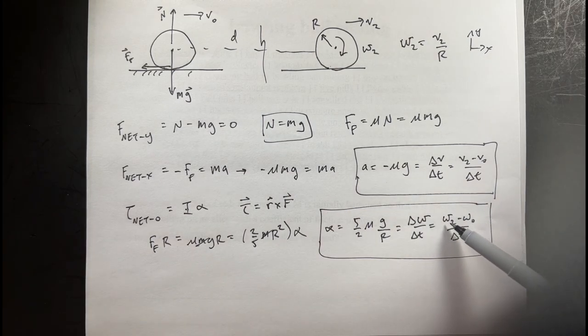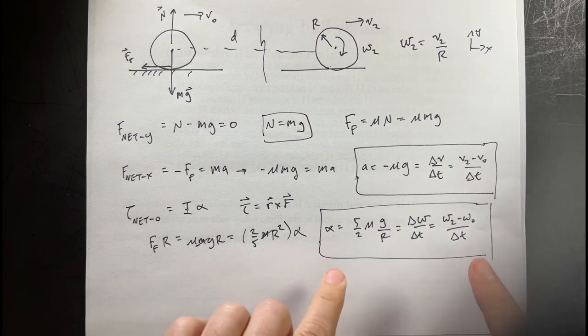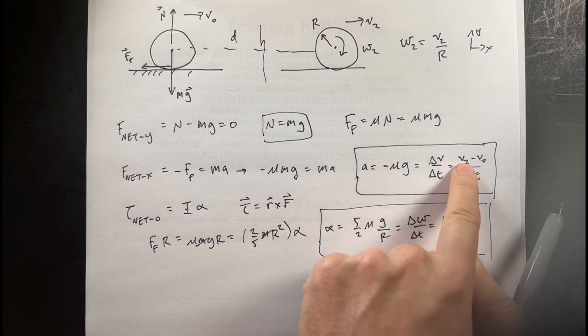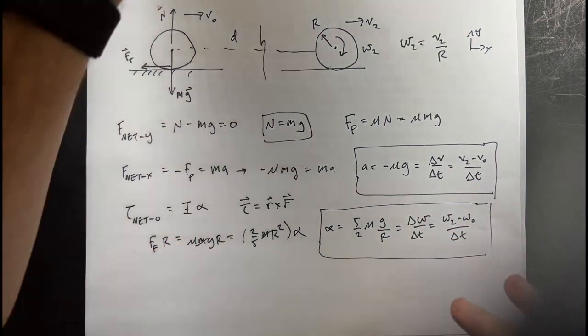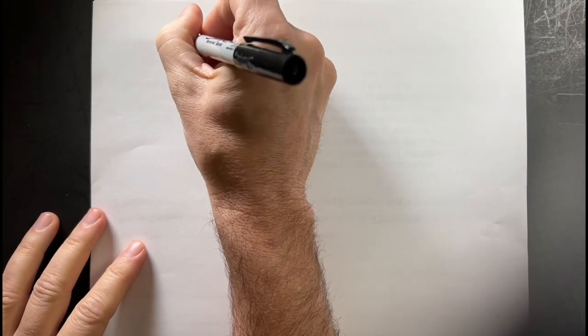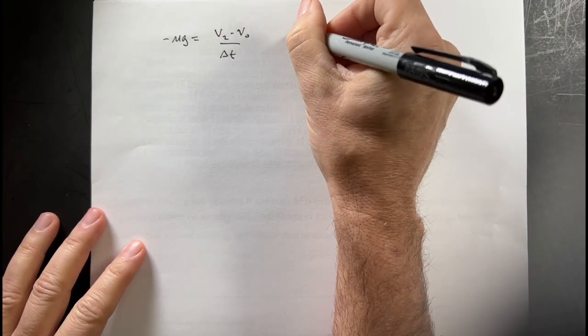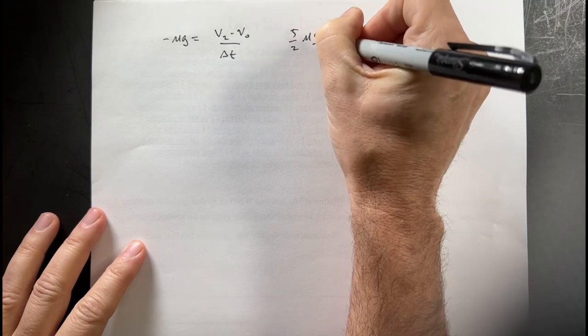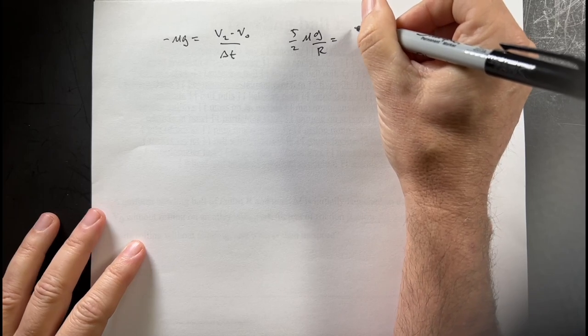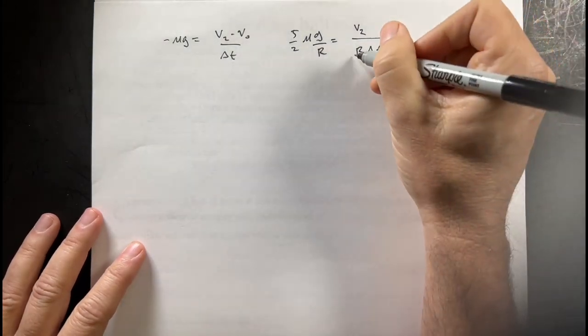And I have two expressions. Now, I do also know one other thing. I know this omega 2 is equal to V2 over R. So, in fact, in these two equations, don't worry about the alpha and the A, I don't know delta T and I don't know V2. But now I have two equations, two unknowns. Okay, let's get another piece of paper. And let me write down my two. Actually, so I guess I have three equations. So, I'm going to replace the omega 2. So, the first equation I had was negative mu G equals V2 minus V0 over delta T. And then the other one I have is 5 halves mu G over R equals omega 2, which is going to be V2 over R delta T minus omega 0, which is 0.